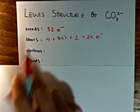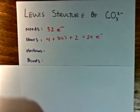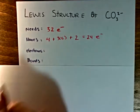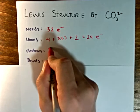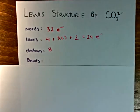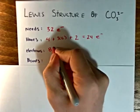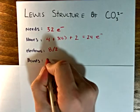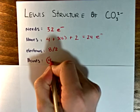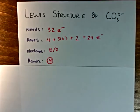We take the difference between the needs and the haves, and that gives us 8 electrons to distribute. Divide that by 2, and that gives us the number of bonds in the structure.